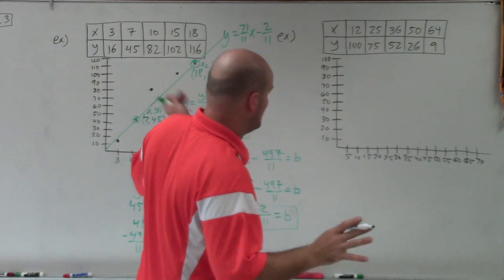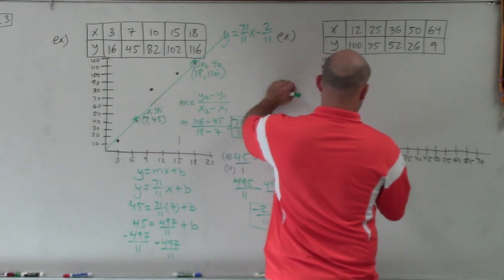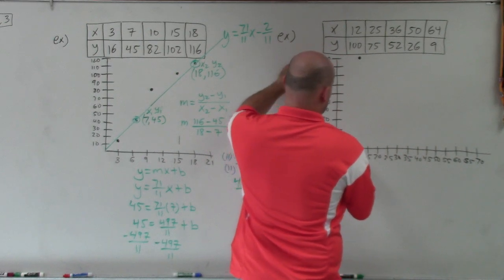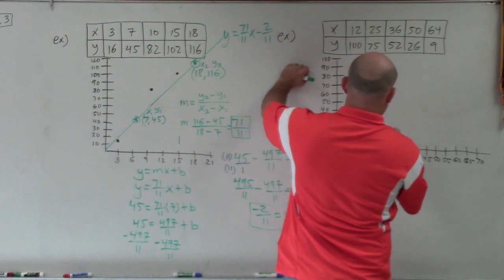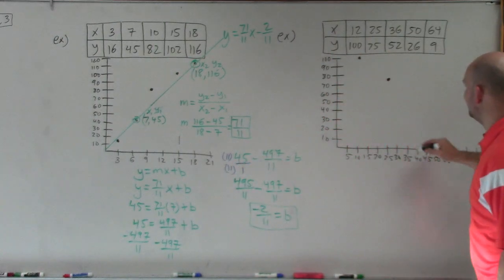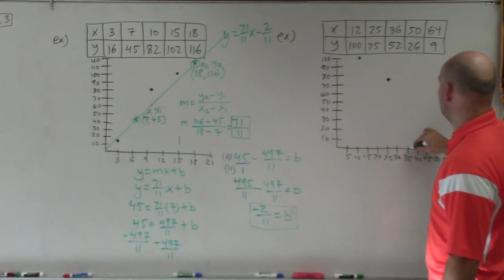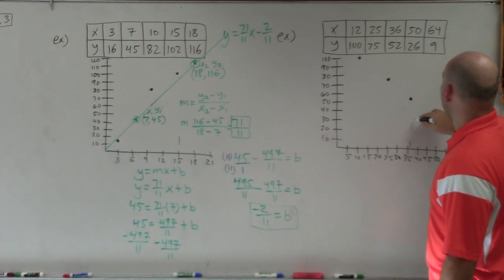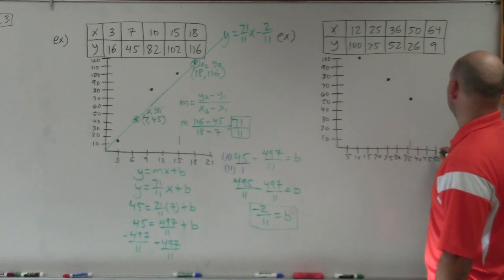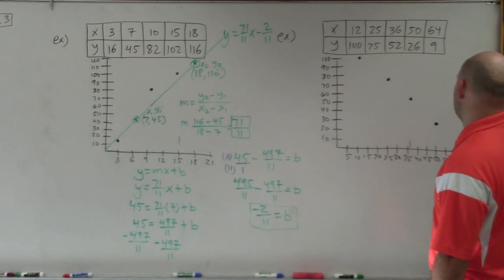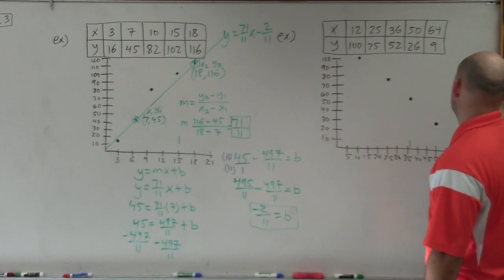So now, just like we did before, let's go ahead and plot the points. So I have 12, 100. So 12 would be like here, up 100. Then I have 25, 75. That's nice. And this is really difficult without any grid lines. So I'm trying to do my best. The next one is 36, 52. Then I have 50, 26. And then I have 64, 9.